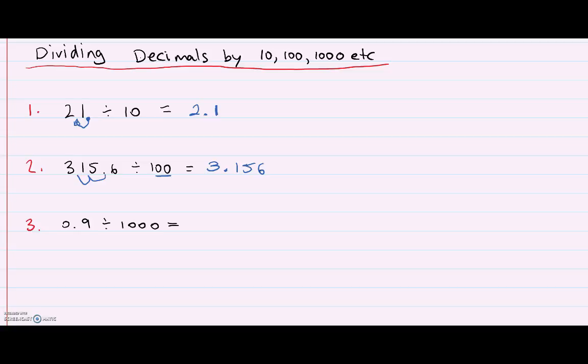Now for my last example, 0.9 divided by 1,000. I need to move my decimal point back three spots to the left. I've moved my decimal point past two numbers that aren't actually there, so we need to add in zeros to make sure we keep that place value. Also, we'll need to make sure there is a zero before the decimal point. This means 0.9 divided by 1,000 is 0.0009.